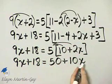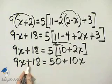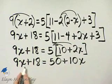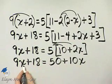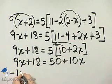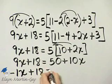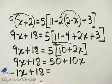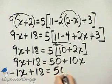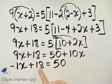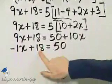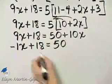If you subtract 10x from both sides, 9x minus 10x, that's negative 1x or minus x, plus 18, is equal to, subtracting 10x on the right, I have simply 50.